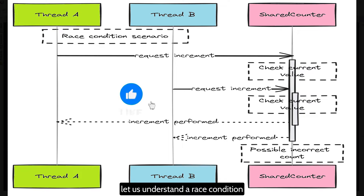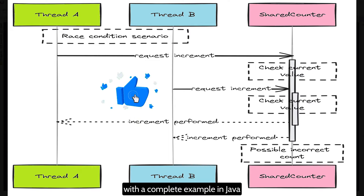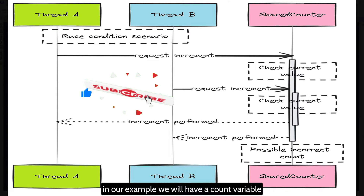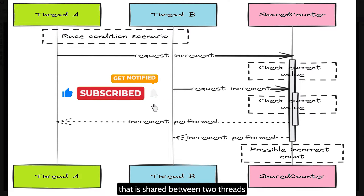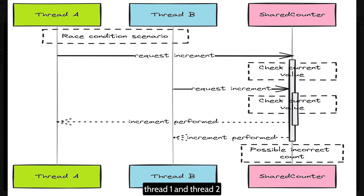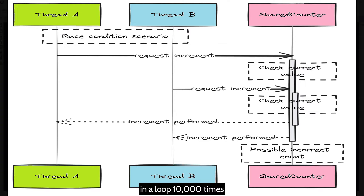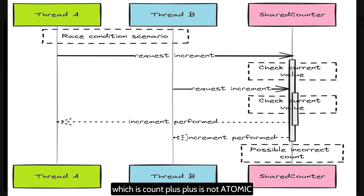Let us understand a race condition with a complete example in Java. In our example, we will have a count variable that is shared between two threads, thread 1 and thread 2. Both threads will increment the count variable in a loop 10,000 times. Because the increment operation, count++, is not atomic, there is a possibility of a race condition occurring.